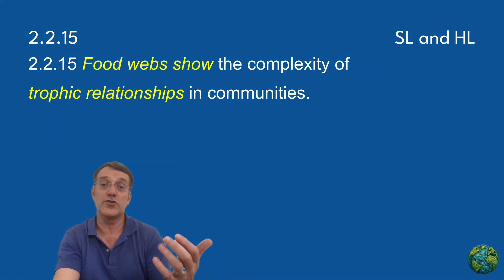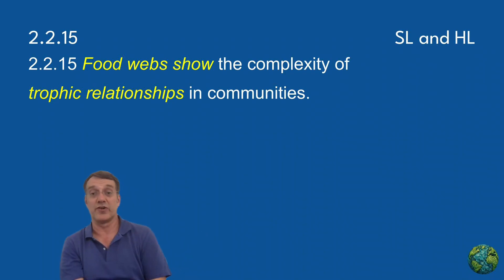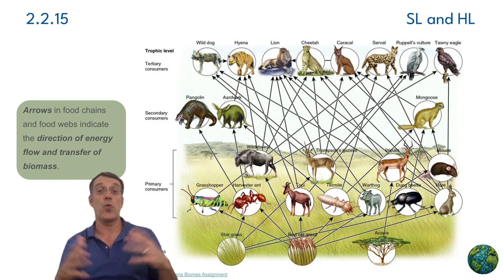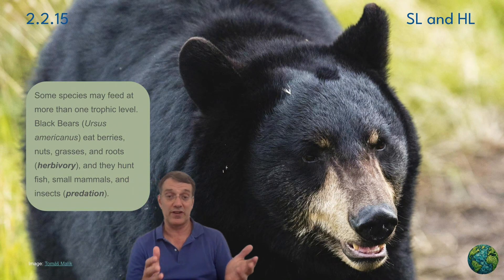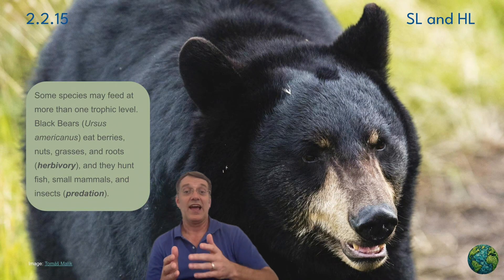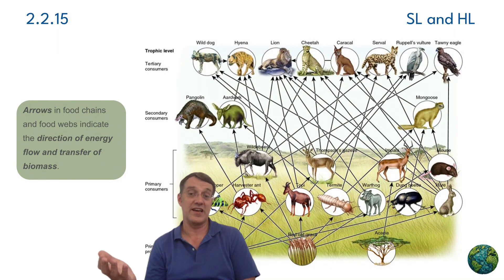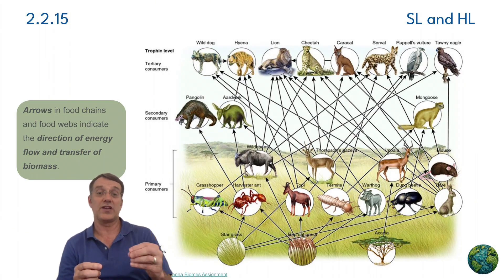Food webs show us the complex feeding relationships in communities of living organisms. Unlike simple food chains, food webs reveal how species may feed at multiple trophic levels and how energy can flow through different pathways within an ecosystem. The arrows in food webs always indicate the direction of energy flow and biomass transfer between organisms.